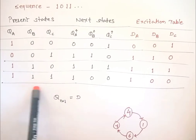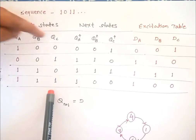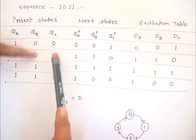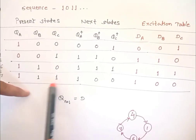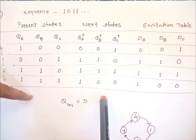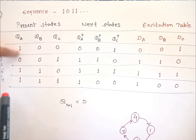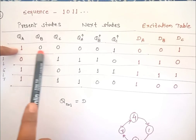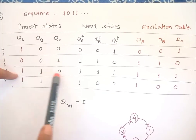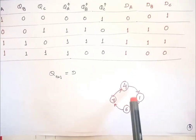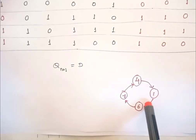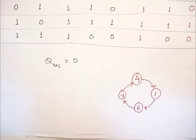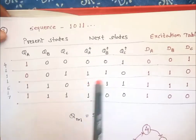QA, QB, QC has three bits, so there are eight possible combinations from 0 to 7, but we have written only four. Whatever remaining combinations exist are treated as don't care conditions. Now let us draw the state diagram: from state 4 we go to 1, then to 6, then to 7, and back to 4. This is the state diagram for the required output.